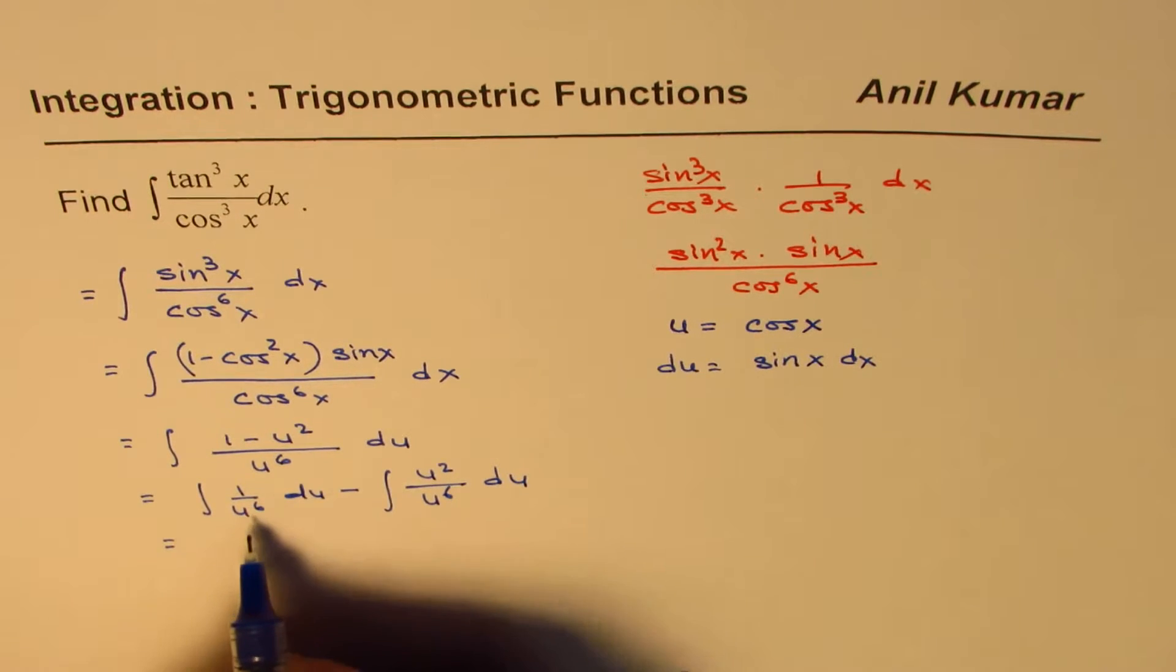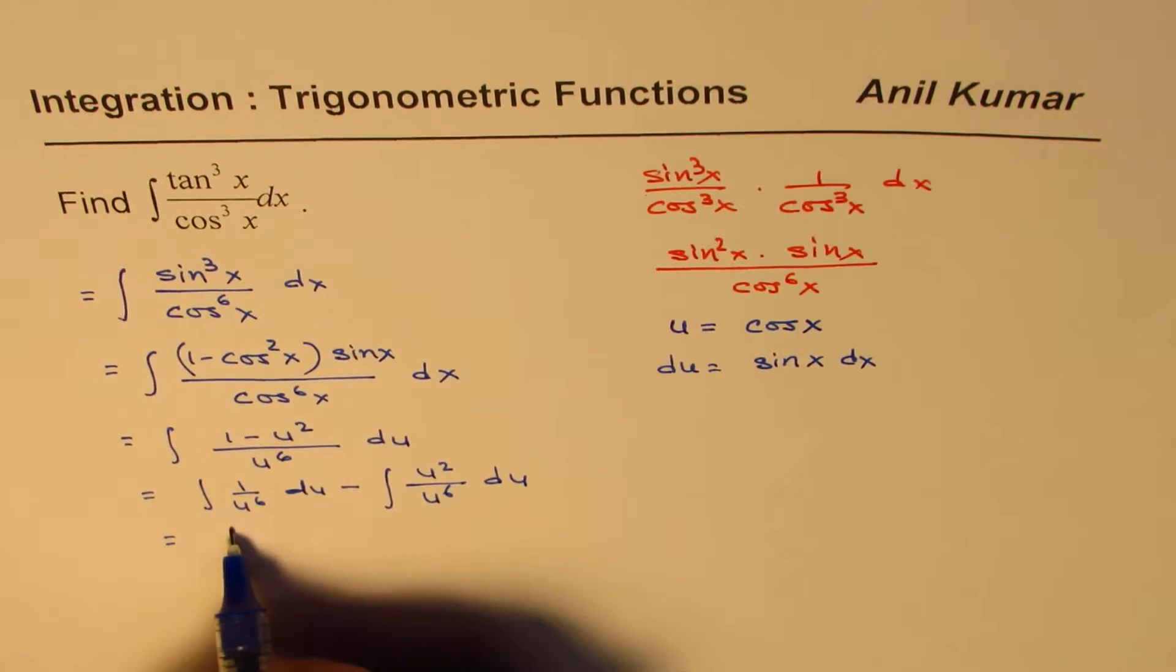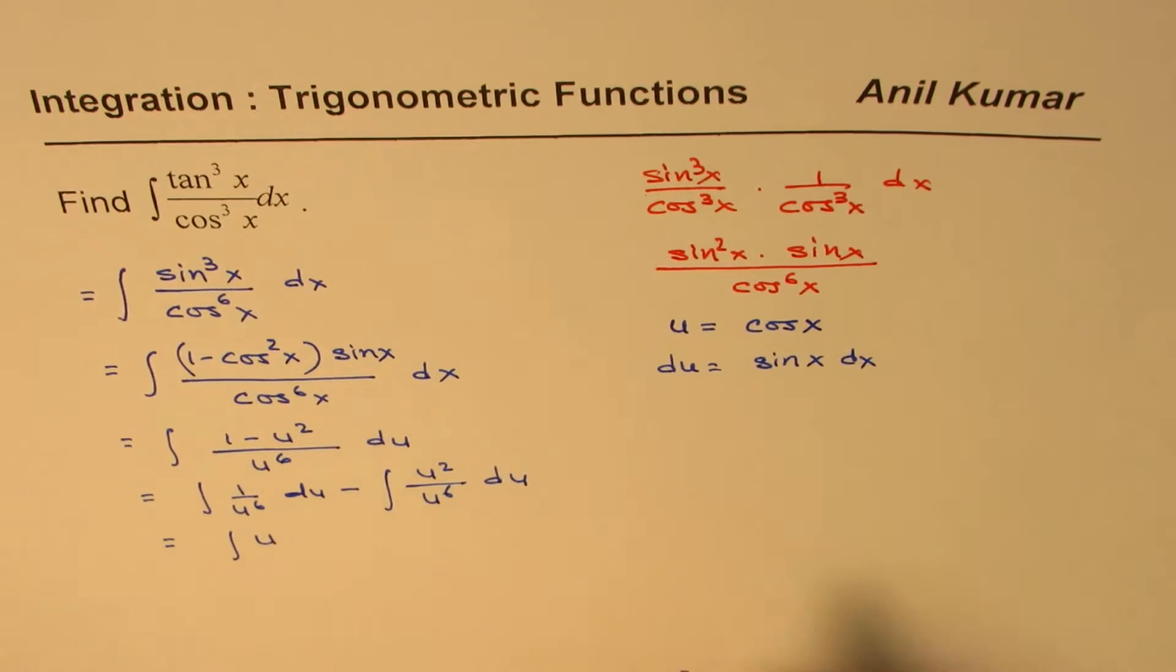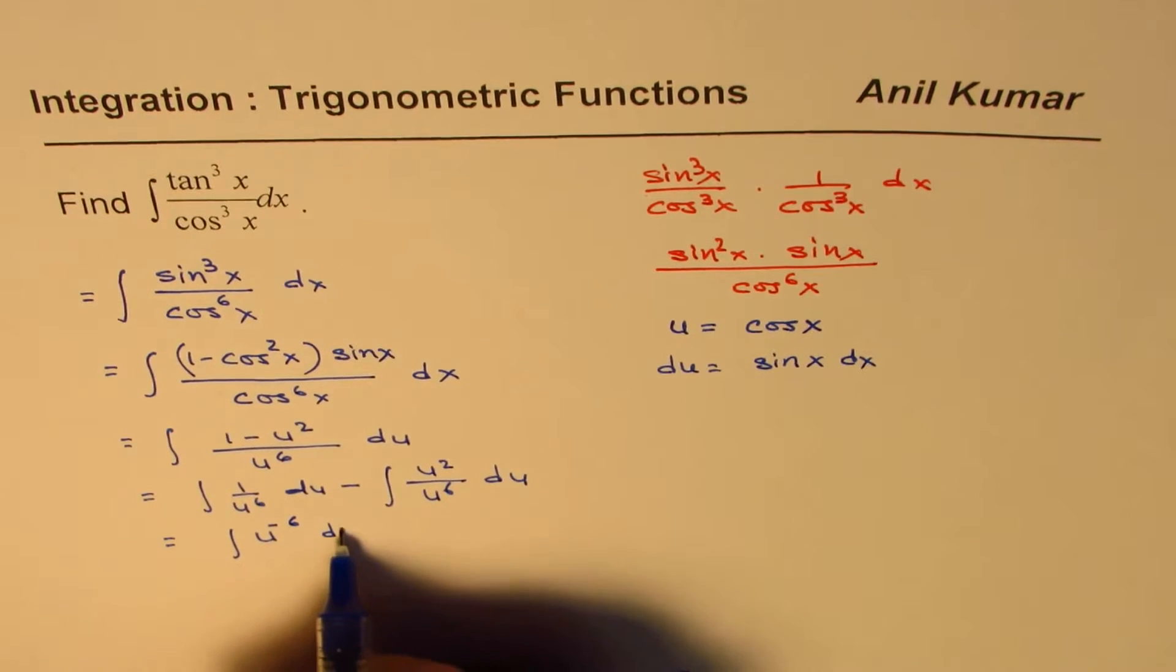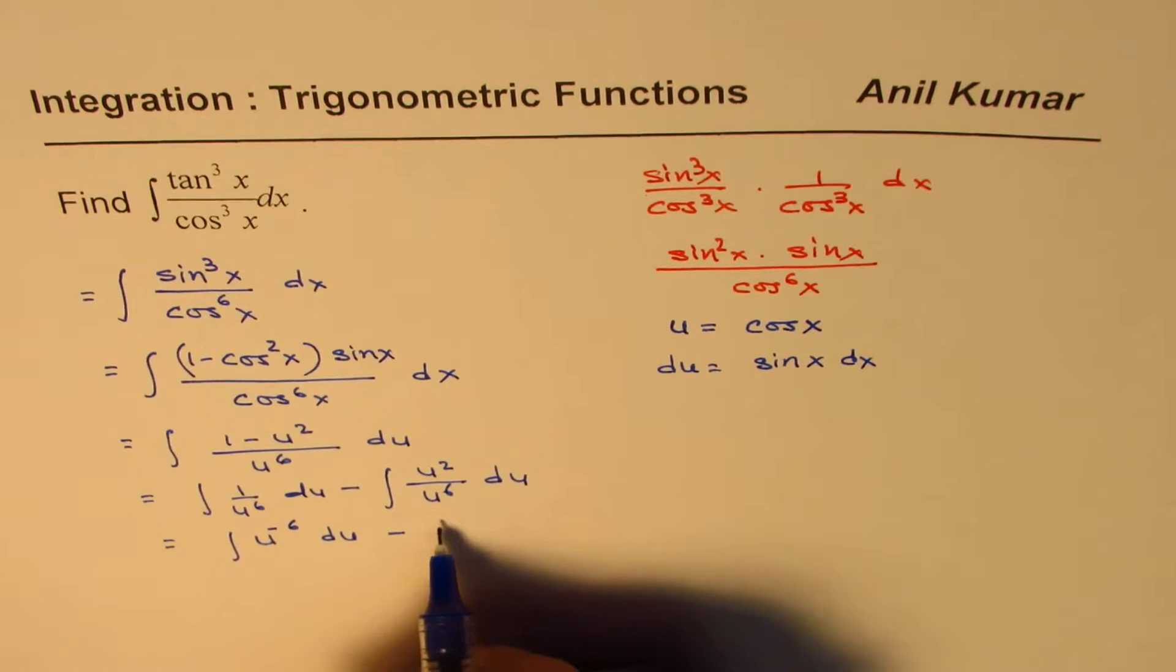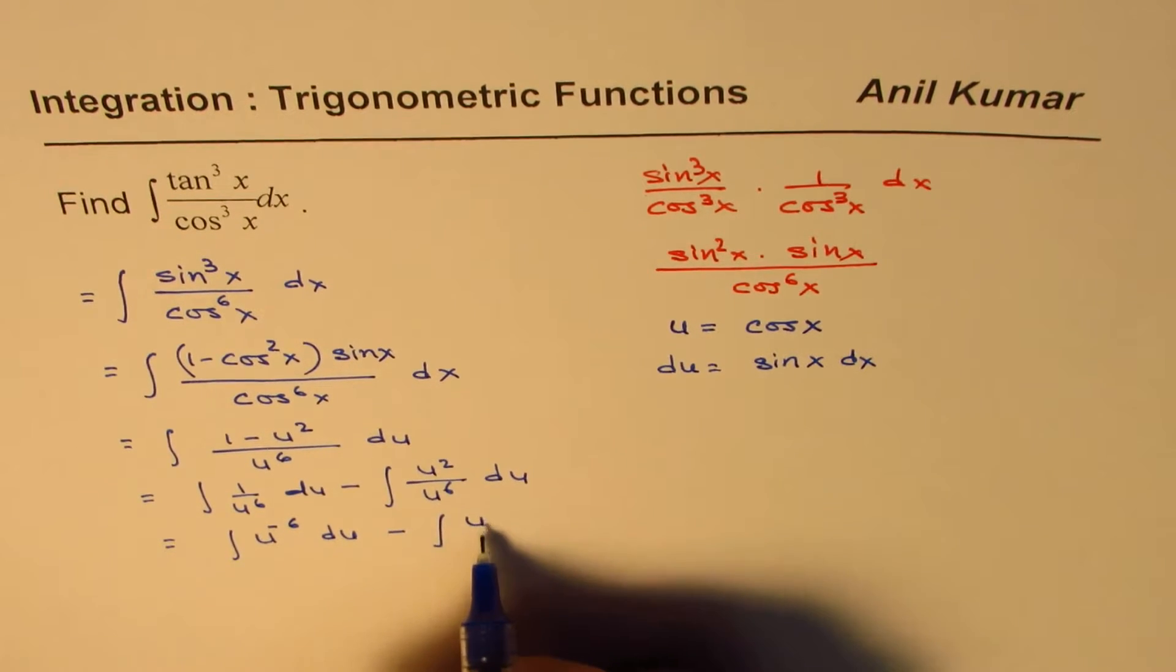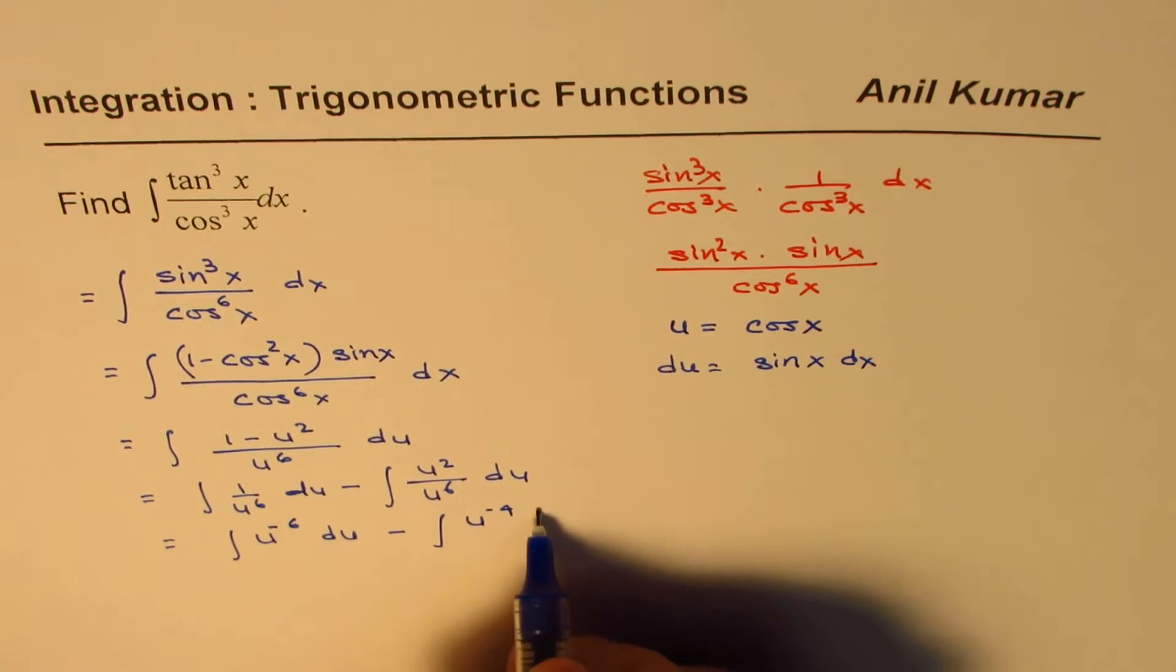Let me now rewrite this as u to the power of minus 6 du, and here we can simplify this, and that becomes u to the power of minus 4 du, correct?